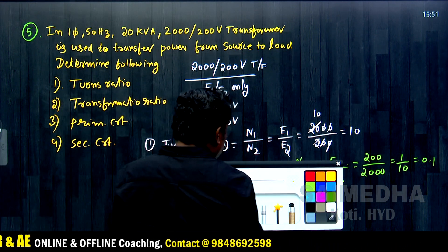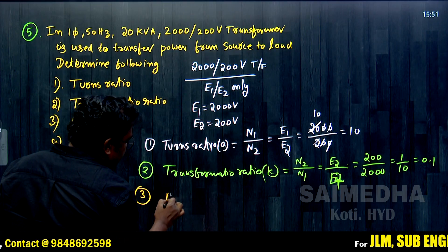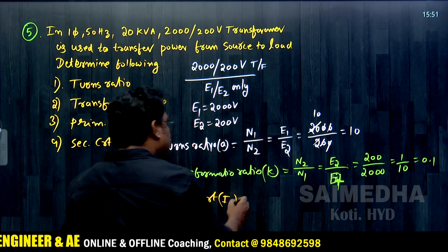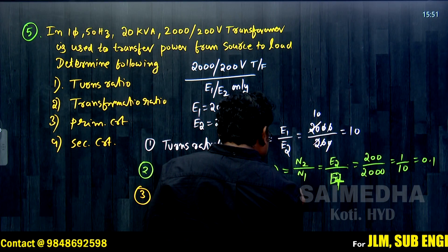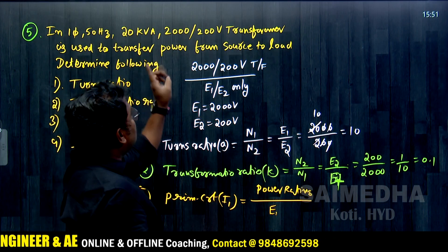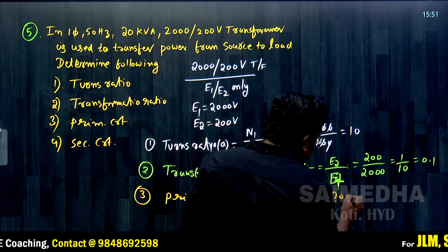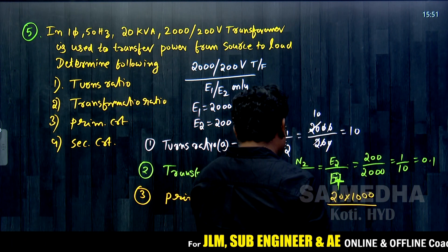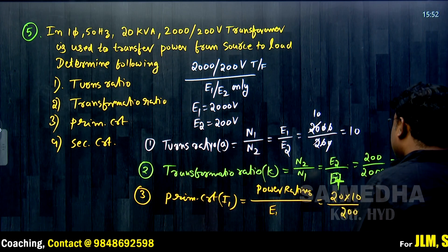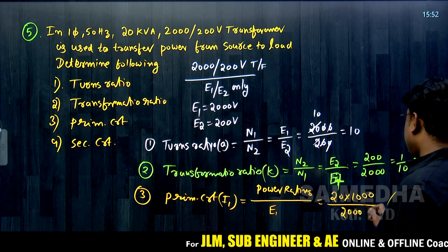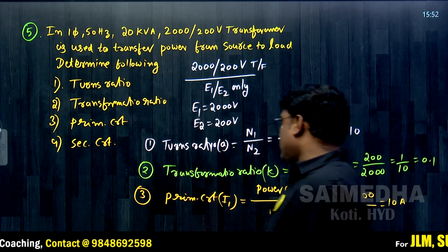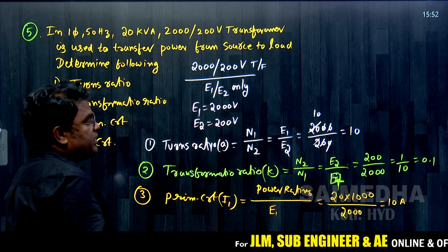For the primary current I1: power rating divided by primary voltage = 20 × 1000 divided by 2000 volts = 10 amps. So the primary current is 10 amps.